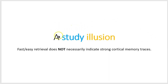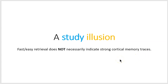In this lesson I want to discuss a study illusion: that fast easy retrieval does not necessarily indicate strong cortical memory traces. We'll assume you've already watched the previous lessons in this series on how brains make memory traces and the importance of communication between the hippocampus and the cortex in consolidating memories in our long-term system.